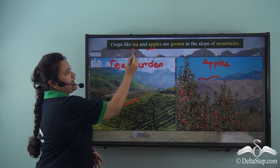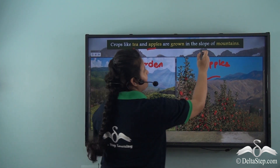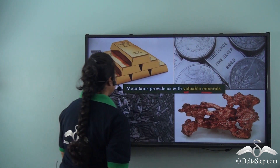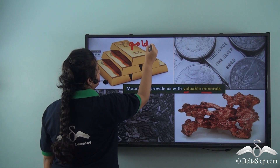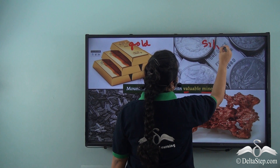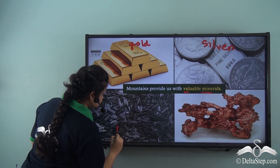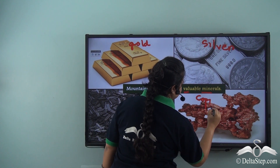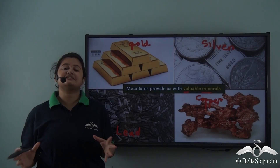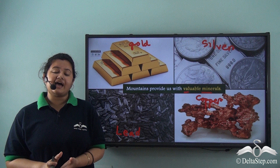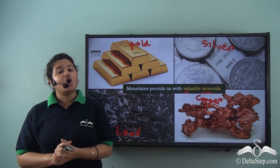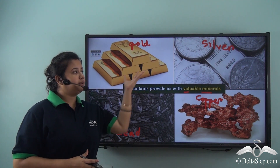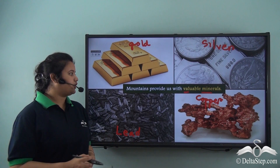Crops like tea and apples can be cultivated on the slopes of mountains. Mountains also provide us with valuable minerals like gold, silver, lead, and copper. These minerals and metals have high economic value as they are widely used in manufacturing industries and automobile industries, and metals like gold and silver are used for making jewellery. Thus, these valuable minerals are obtained from mountains.